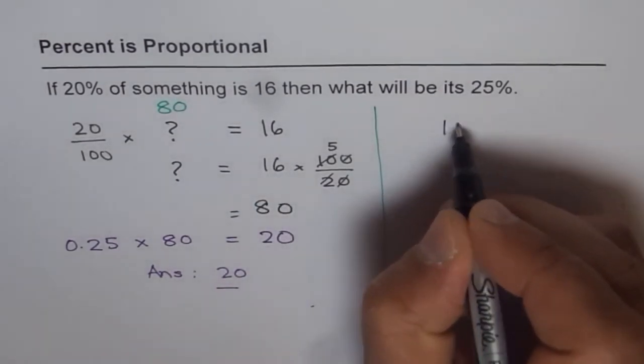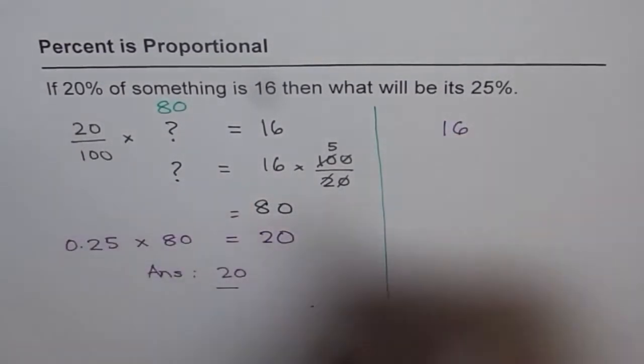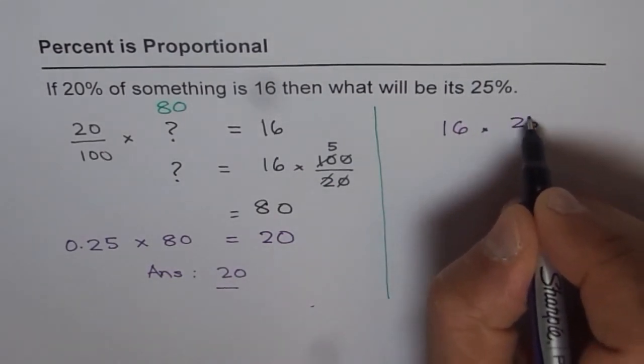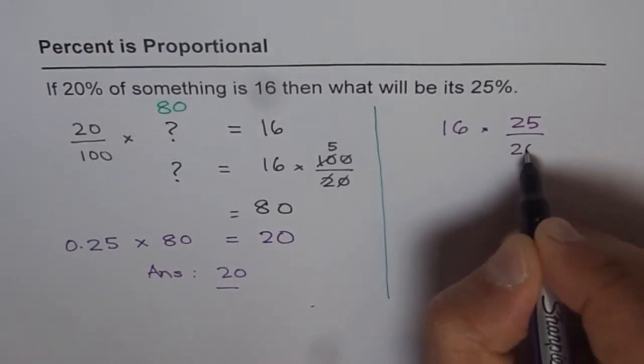So, it should be how much? It will be in the ratio of 25 to 20. So, we will multiply 16 by 25, and divide by 20, to get our answer.